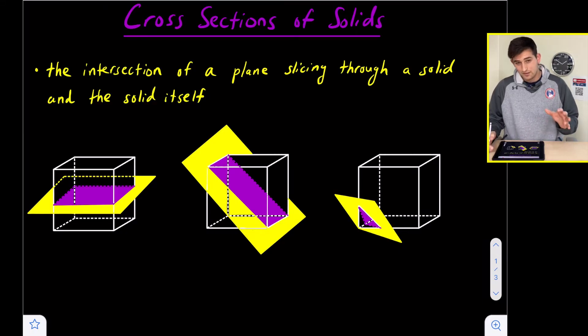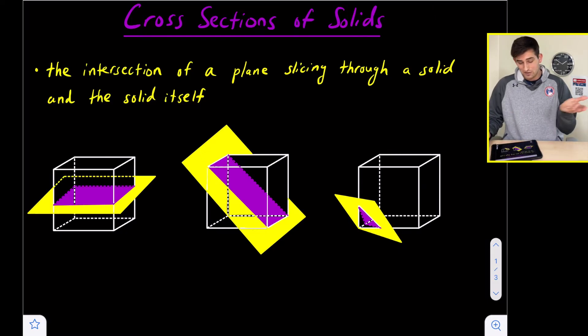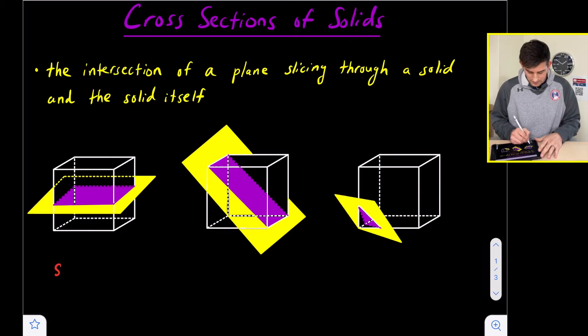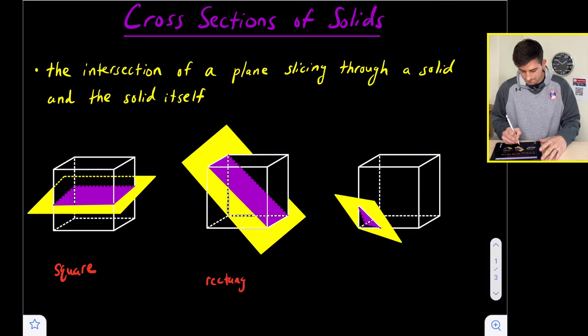Here we have three cubes, and depending on where the cube is being sliced by the plane, it's going to create a different cross section. On the far left, the plane is slicing the cube directly in half horizontally, which gives us a square cross section. The second cube has the plane slicing at a diagonal, which forms a rectangle. The third cube has a plane slicing just an edge off, creating a triangle cross section.